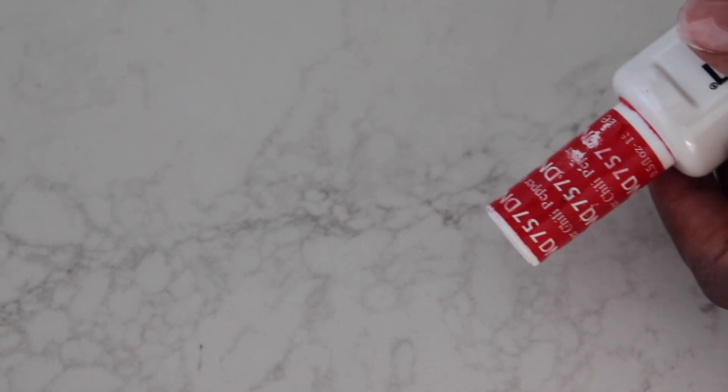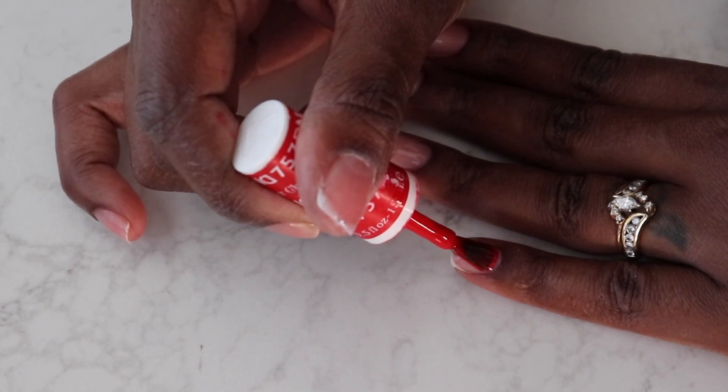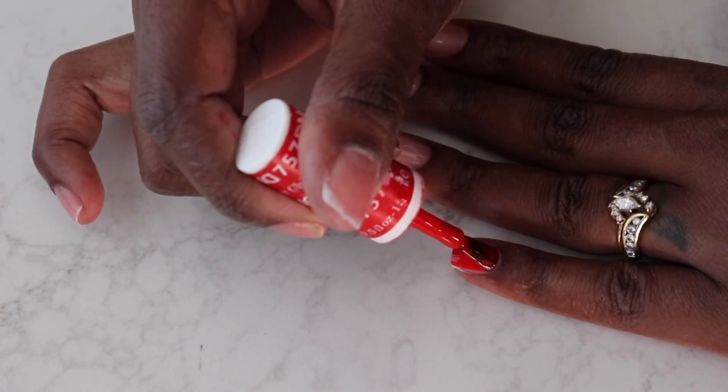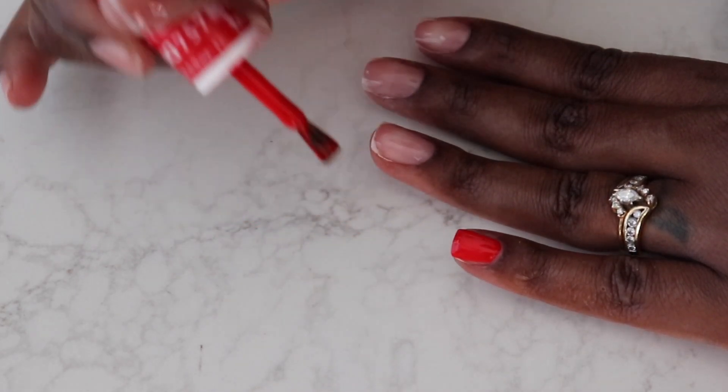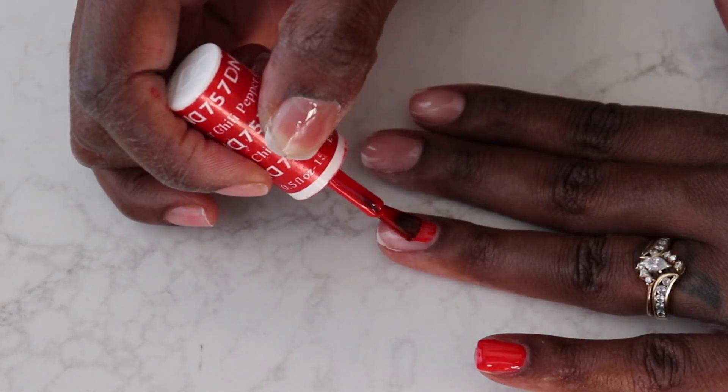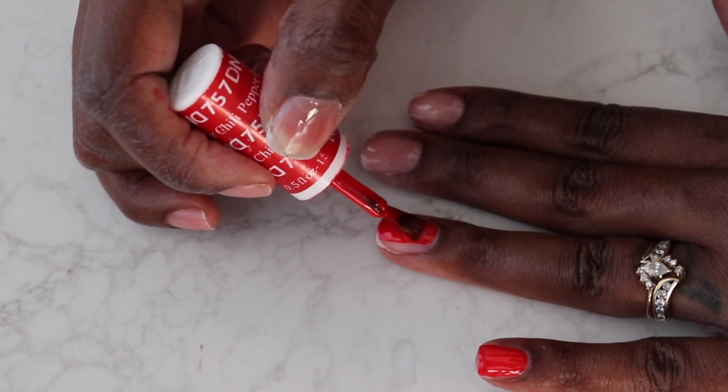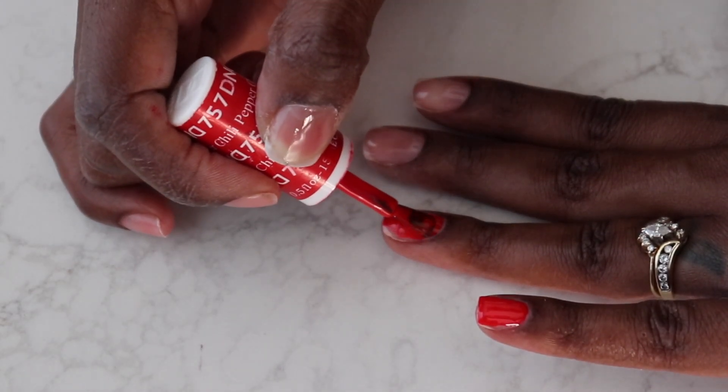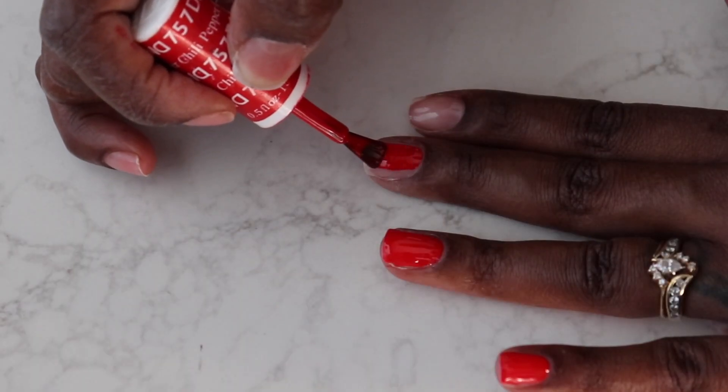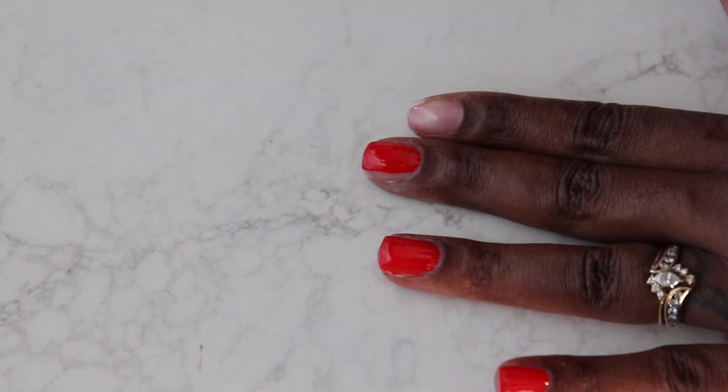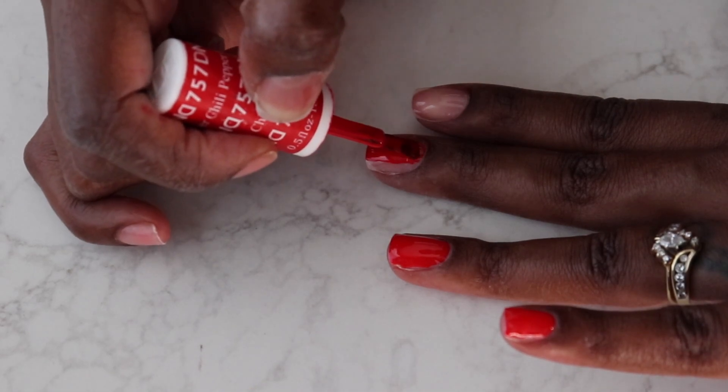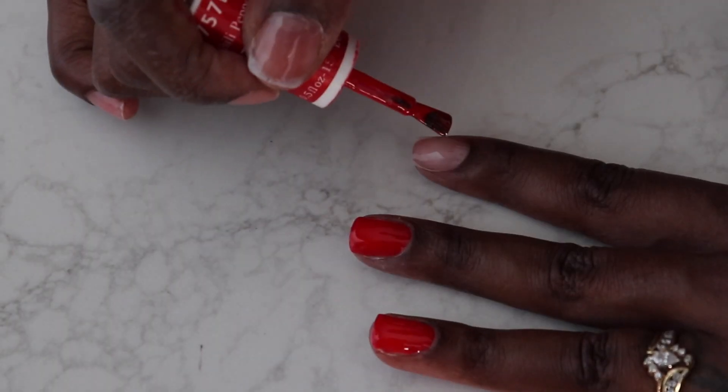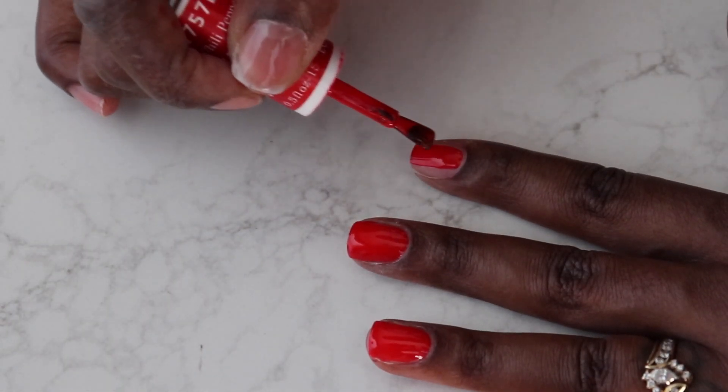All right, so the color we're going to be using today is Chili Pepper by DND. Remember to polish your first layer as thin as possible, trying your best to get it as close to the cuticle as possible. Now if you do mess up and you get it on your cuticles, it's not the end of the world. Calm down, friend. All you need is a little bit of alcohol or acetone. You want to make sure that your brush is more dry than wet and you clean that area off. You can also use Q-tips. I'm not a Q-tip fan when it comes to polish only because I don't like the little hairs getting stuck. That would frustrate me.